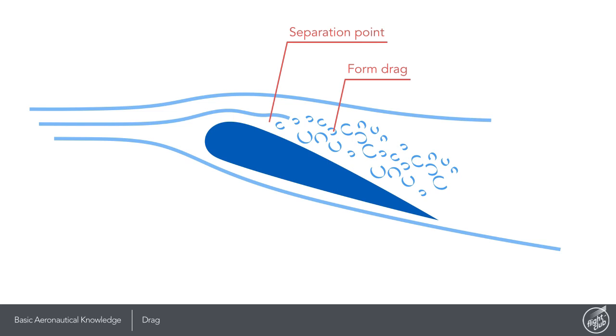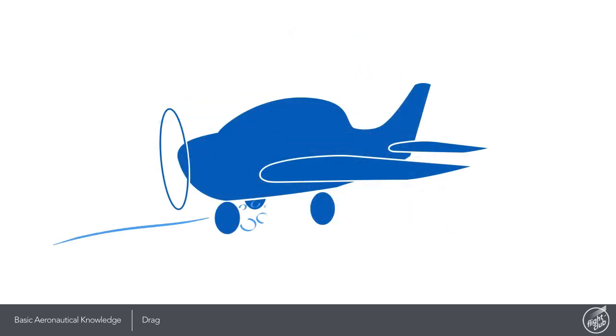Form drag is caused by disturbed airflow that separated from the surface and spawned into turbulent wake. The more streamlined an object is the less form drag it creates. So any obstruction to smooth airflow such as dangling wheels will produce form drag.